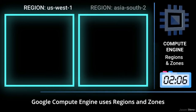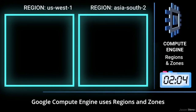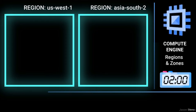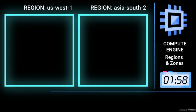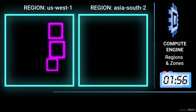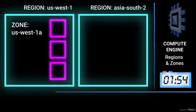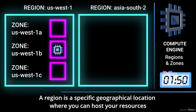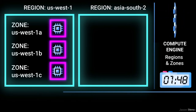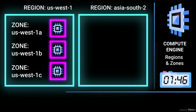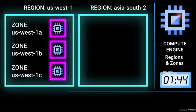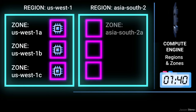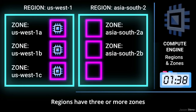Google Compute Engine uses regions and zones. A region is a specific geographical location where you can host your resources. Regions have three or more zones.